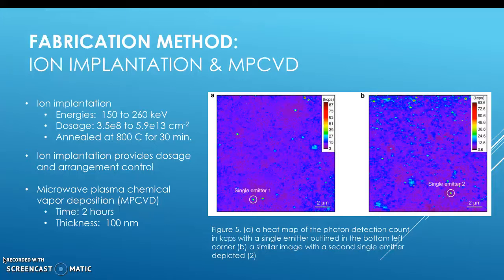To avoid this stress altogether, Iwasaki et al. uses microwave plasma chemical vapor deposition. The time scale is much longer, but you don't have to deal with the stresses and the annealing optimization.